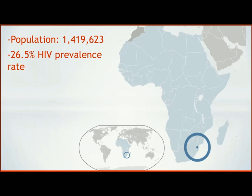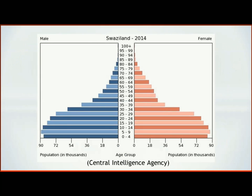The population is just over 1.4 million individuals, and at a 26.5% HIV prevalence rate, Swaziland has the highest known HIV prevalence rate. The population distribution diagram from the Central Intelligence Agency shows that the majority of people are within a lower age group — about 37% of the population is aged 0 to 14, and the median age in the country is 21 years, approximately the same for both males and females.